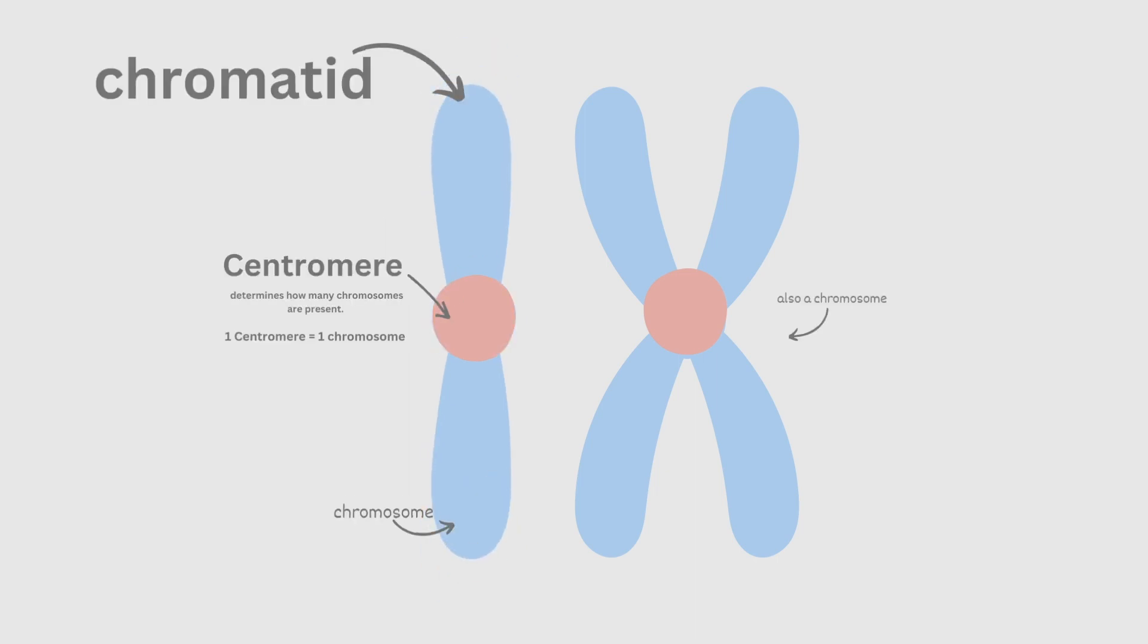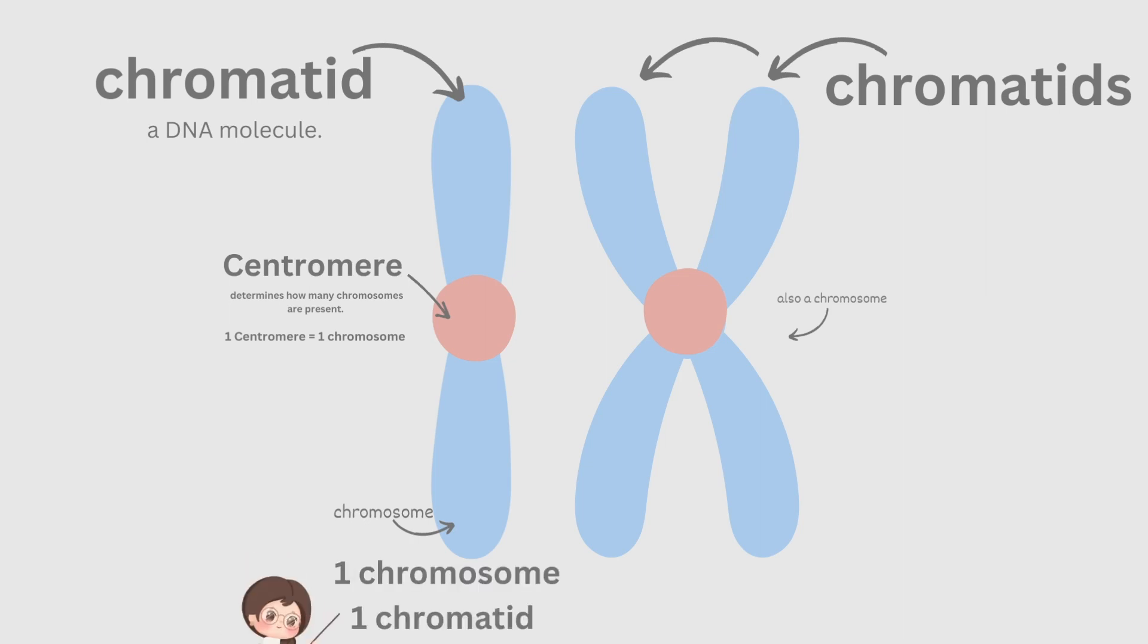This long shape here is called a chromatid. A chromatid is a piece of DNA, a DNA molecule. Technically it's made of DNA and histone proteins. Here we have two chromatids. So on the left we have one chromosome with one chromatid and on the right we also have one chromosome with two chromatids.